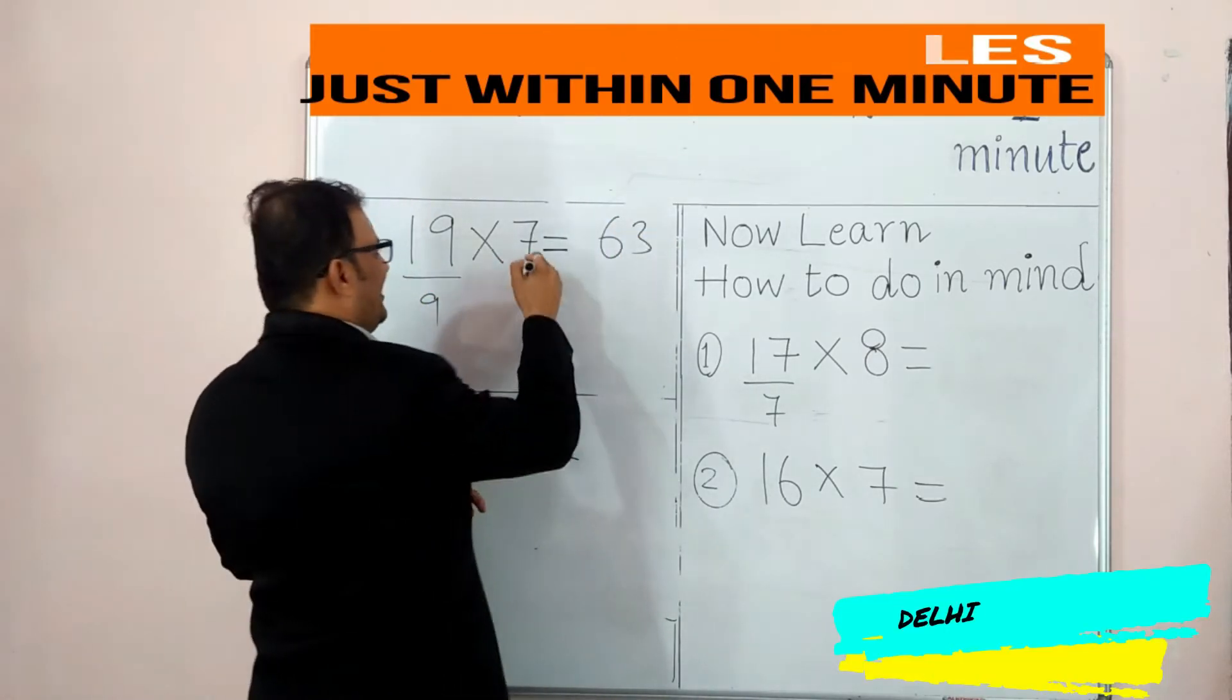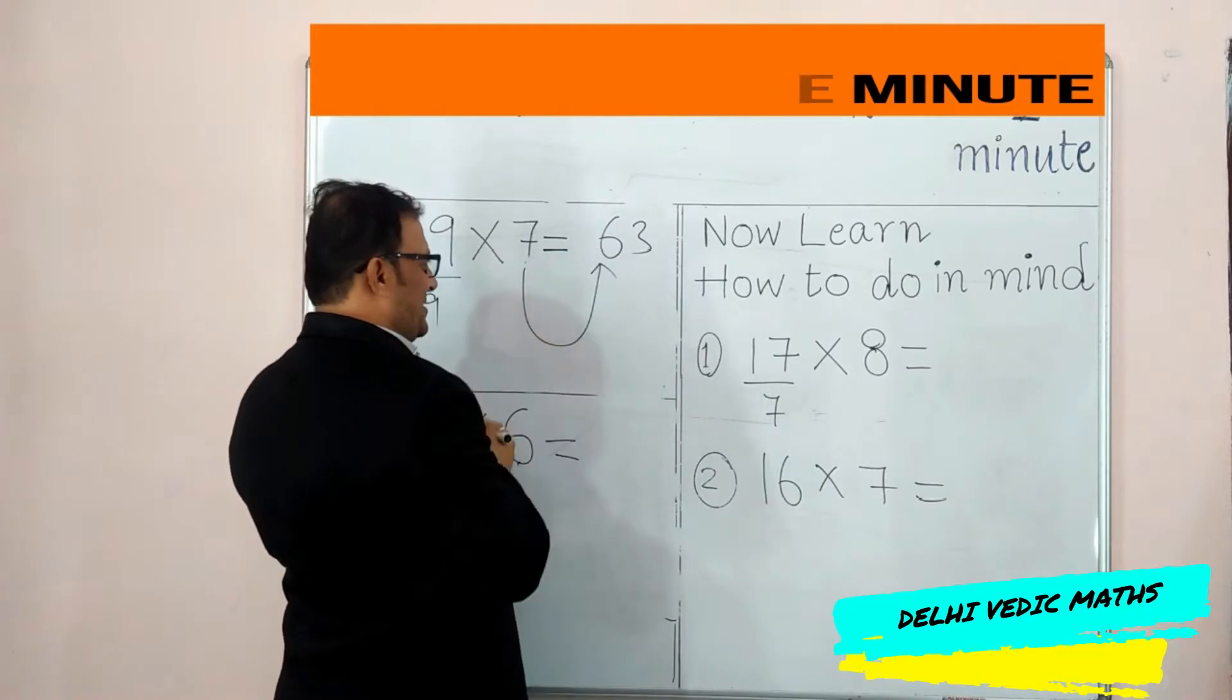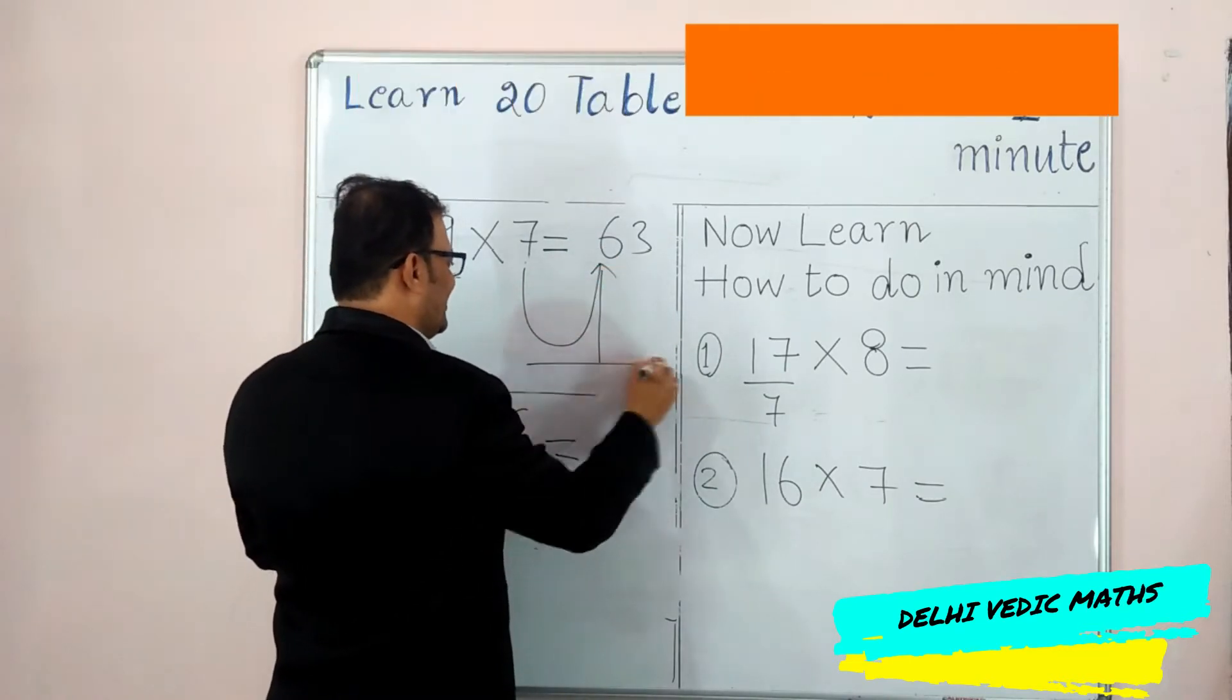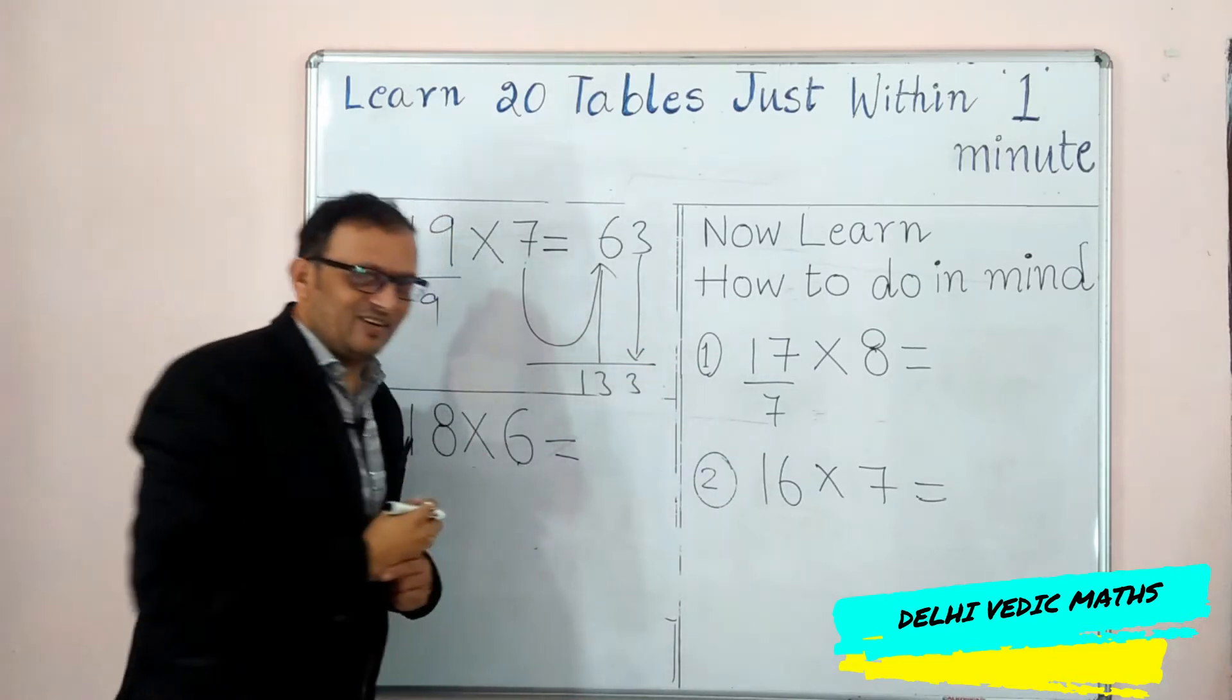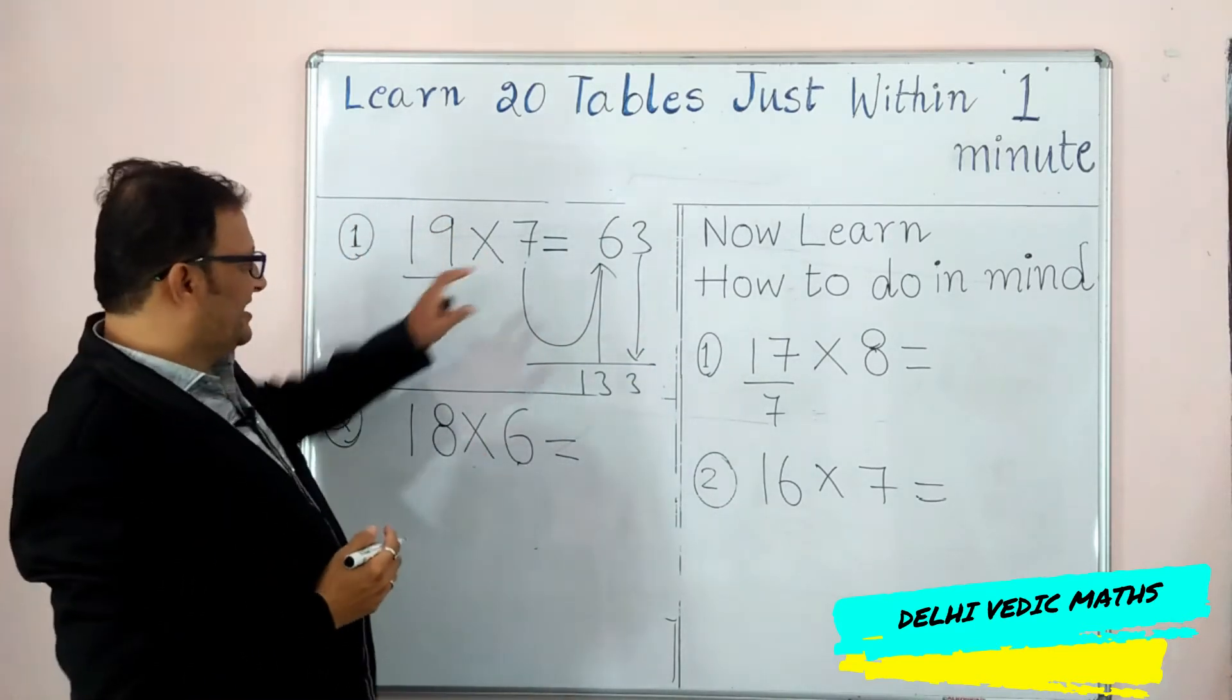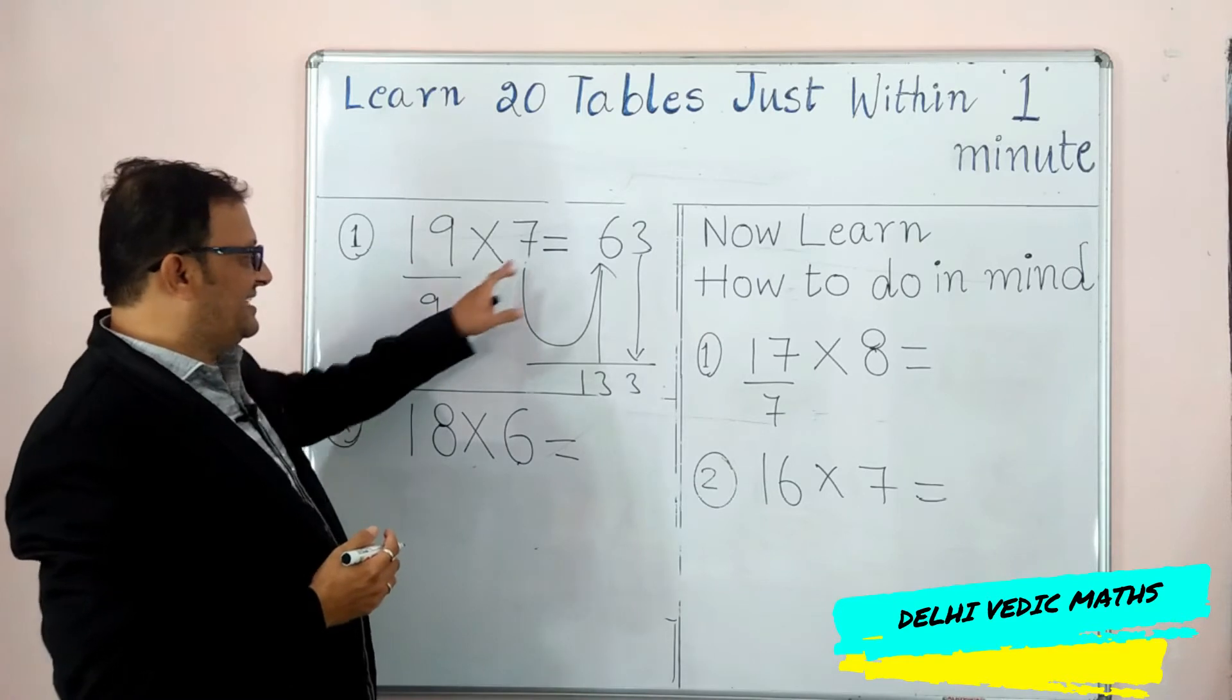Now, we will give you the 7th table. What is the 6th table? We will give you the 9th table. 9×7 is 63.